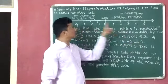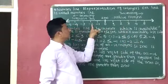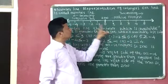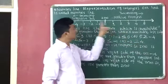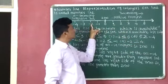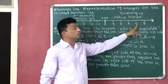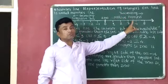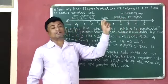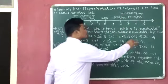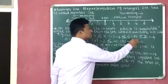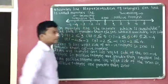Minus two and four — minus two is here and four is here. Four is available on the right side of minus two, so four is greater.